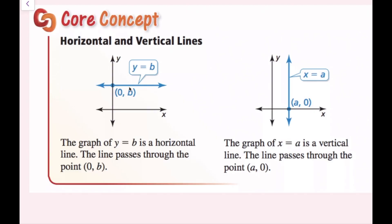If I look at a horizontal line, it doesn't matter what the input is — the output is going to be this b value. So that is y equals b. I can put any value in for x, but since there's no x, my y value stays b, and on a graph that's a horizontal line. For a vertical line, x is going to equal our constant a value — it doesn't matter what my y value is, because x is always going to be that a value, and this is a vertical line. Just a reminder: this is a function, this is not a function.